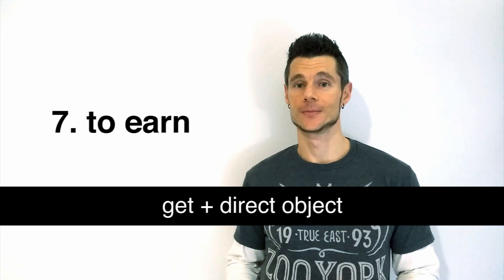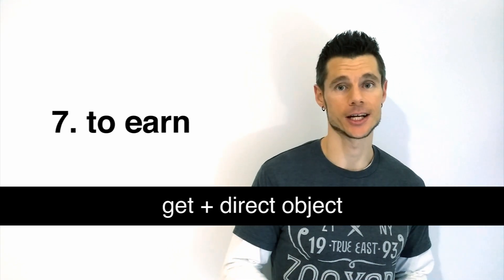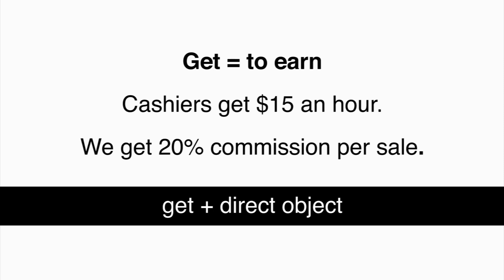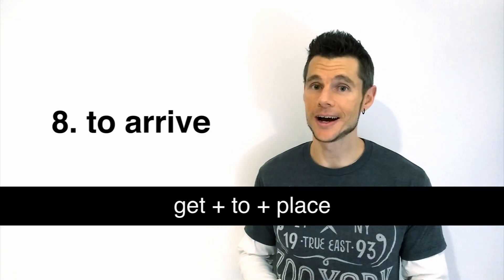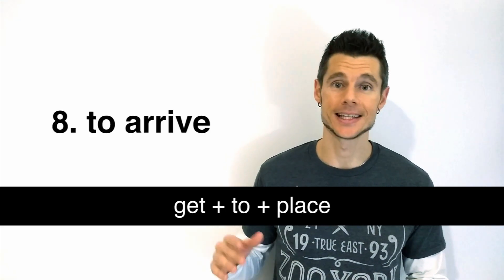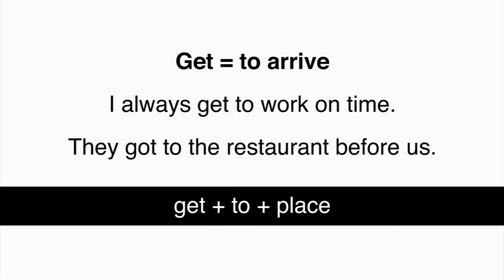GET can mean to earn. The structure used is GET plus direct object. Cashiers get $15 an hour. We get 20% commission per sale. GET can mean to arrive. The structure used is GET plus TO plus place. I always get to work on time. They got to the restaurant before us.